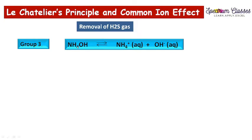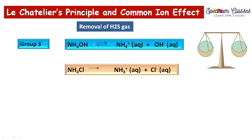After removing H2S, for Group 3 the reagent is a base — NH4OH — which dissociates in equilibrium as NH4⁺ plus OH⁻. This NH4OH is added in the presence of NH4Cl. Since the Ksp values for Group 3 hydroxides are low, only a small amount of OH⁻ is required. Due to the common ion NH4⁺ from NH4Cl, the equilibrium shifts backward, giving less concentration of OH⁻, which is still sufficient to precipitate Group 3 metal hydroxides.